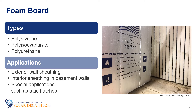Foam boards — rigid panels of insulation — can be used to insulate almost any part of a building, from the roof down to the foundation. They are very effective in exterior wall sheathing, interior sheathing for basement walls, and special applications such as attic hatches. They provide good thermal resistance, up to 2x greater than most other insulating materials of the same thickness, and reduce heat conduction through structural elements like wood and steel studs. The most common types of materials in making foam boards include polystyrene, polyisocyanurate, and polyurethane.